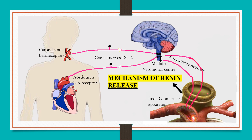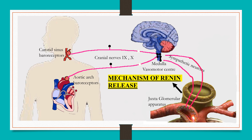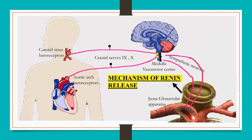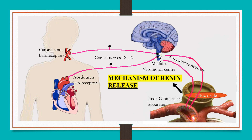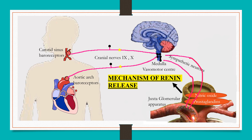The mechanism of renin release through macula densa cells: a fall in blood pressure results in a fall in renal blood flow and GFR. This results in decreased reabsorption of sodium, which is detected by macula densa cells. In response to reduced sodium concentration, these cells release nitric oxide and some prostaglandins, which act on juxtaglomerular cells and cause release of renin.